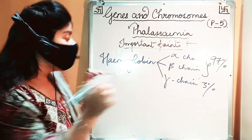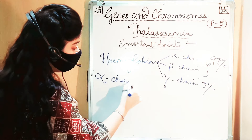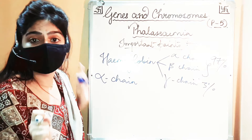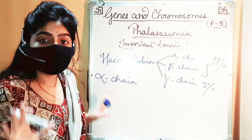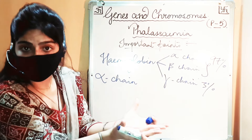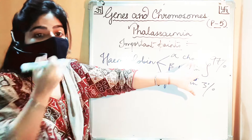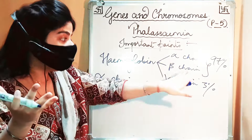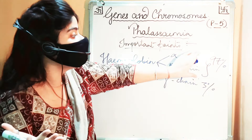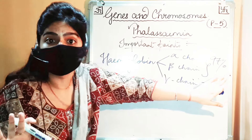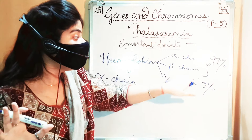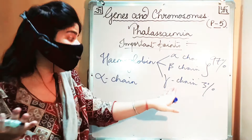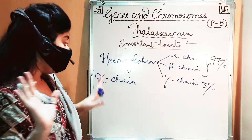If alpha chain is deficient, then the beta chain will make up more than its normal proportion of the composition, since beta chain normally contributes 97%. If alpha is less, then obviously beta will be relatively more than normal. The gamma chain will remain at 3% only.